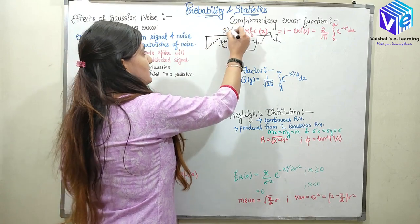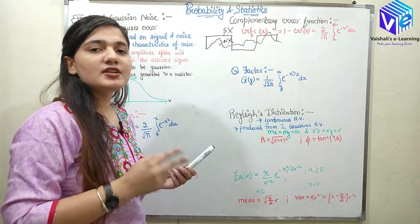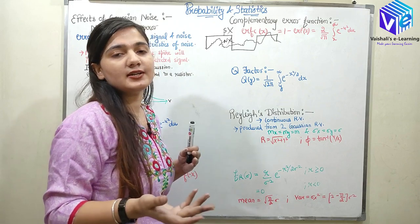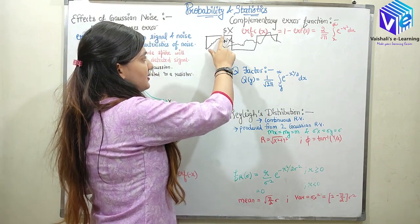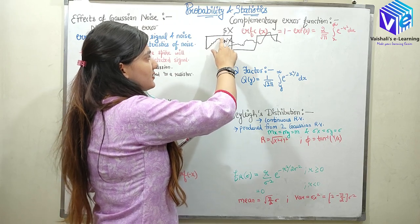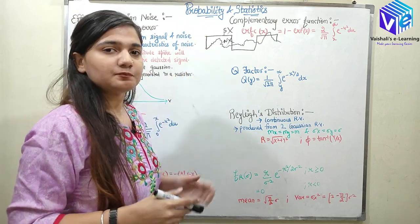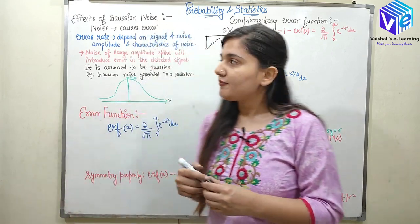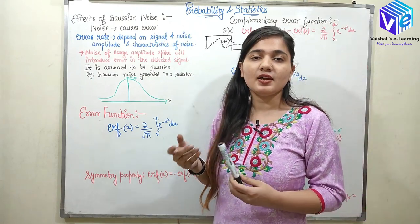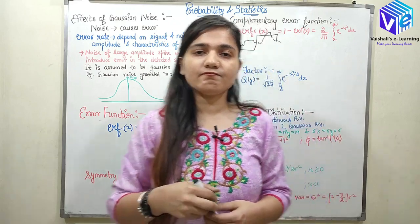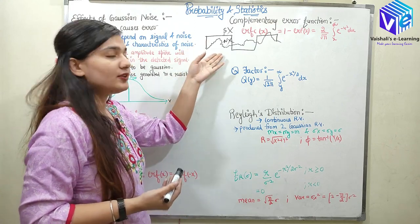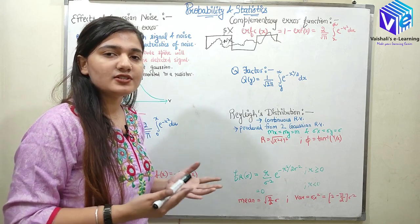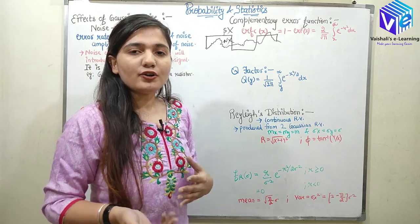At the receiver, not the pure signal nor the pure noise is received — rather the combination of signal plus noise is received. When the noise amplitude is lesser than the signal amplitude, the signal characteristics are preserved. But when the noise amplitude is much greater than the signal amplitude, the signal characteristics are destroyed and the receiver cannot differentiate which is noise and which is the exact signal.